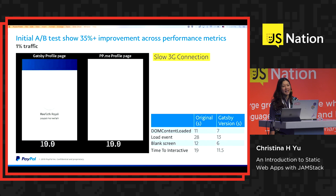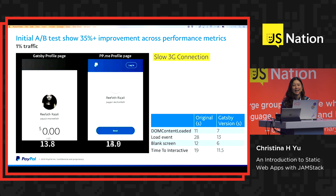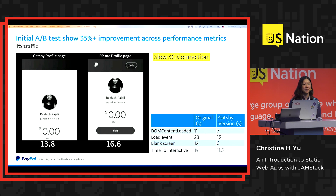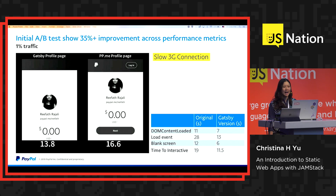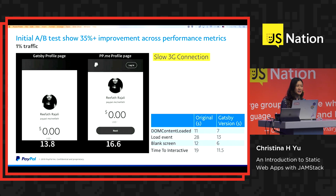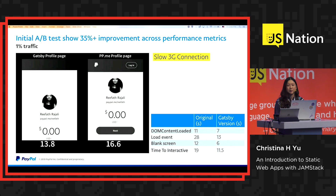As we speak, we're running an initial A/B test with 1% live traffic. The general idea is to render as much static content upfront as possible. You can see that the time to interactive and blank screen time has significantly decreased. In this initial A/B test, there's a 35% improvement across most performance metrics.